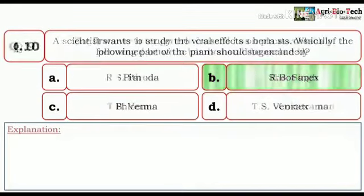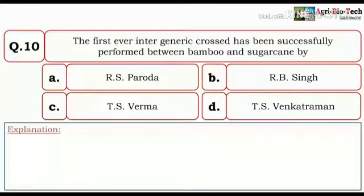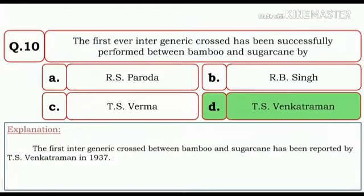And the next question is, the first ever intergeneric cross has been successfully performed between bamboo and sugarcane by R.S. Paroda, R.B. Singh, T.S. Verma, and T.S. Venkatraman. So here the correct answer is T.S. Venkatraman. The first intergeneric cross between bamboo and sugarcane has been reported by T.S. Venkatraman.